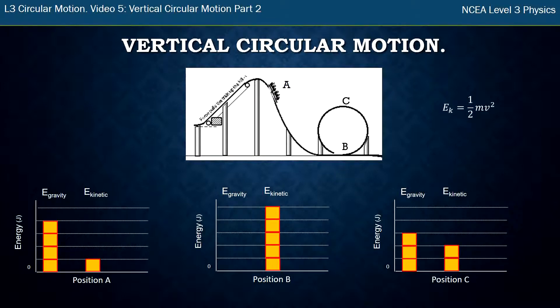Now kinetic energy we know is calculated by half m v squared. So at position B, which is at the bottom of the loop-the-loop and is now where the roller coaster has started the circle, because there's more kinetic energy at point B and because it therefore has a larger velocity...